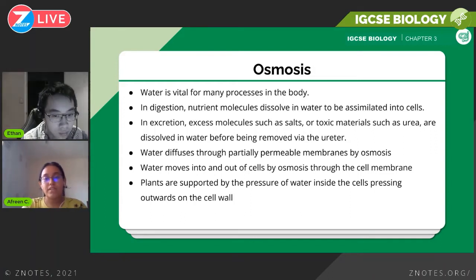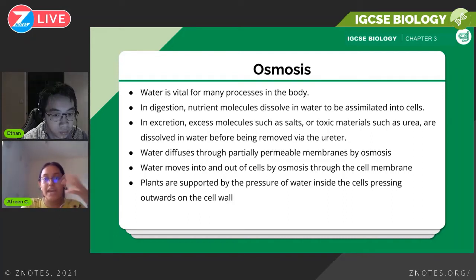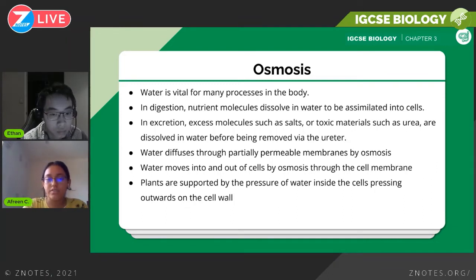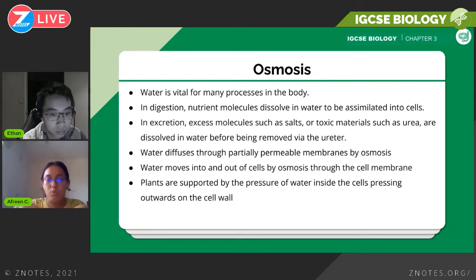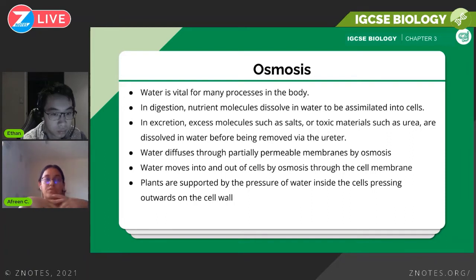Why do we need water? Water is needed for many processes in the body. For digestion, nutrients are dissolved in water so they can be assimilated into cells — meaning nutrient molecules enter cells and become part of them. In excretion, excess and toxic substances like urea are dissolved in water, processed in the kidney, and removed through the ureter. Water also moves through partially permeable membranes — an important point not to miss.